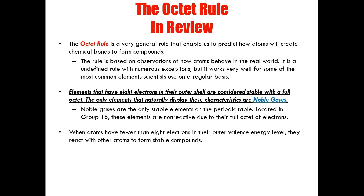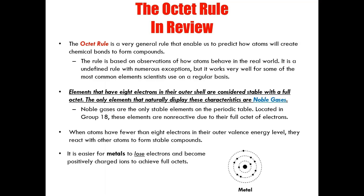When atoms have fewer than eight electrons in their outermost energy level, they react with other atoms to form stable compounds to achieve full octets. Take metals for example. It is easier for metals to lose electrons and become positively charged ions to achieve full octets. Let's look at this metal atom. It has one electron in its outermost energy level. It's obviously going to lose this one electron instead of gaining seven electrons to get a full octet.